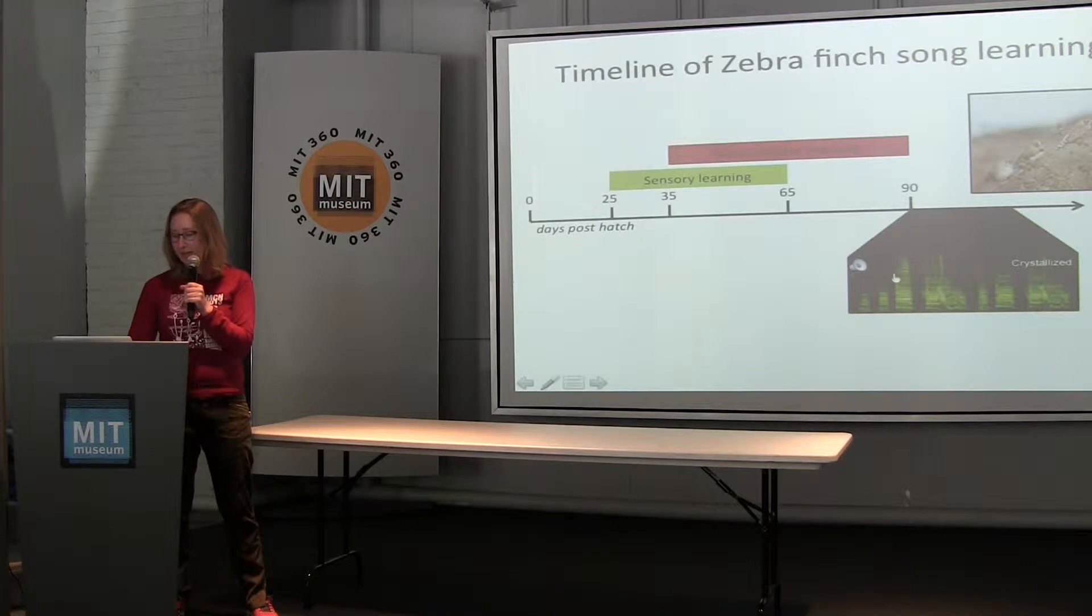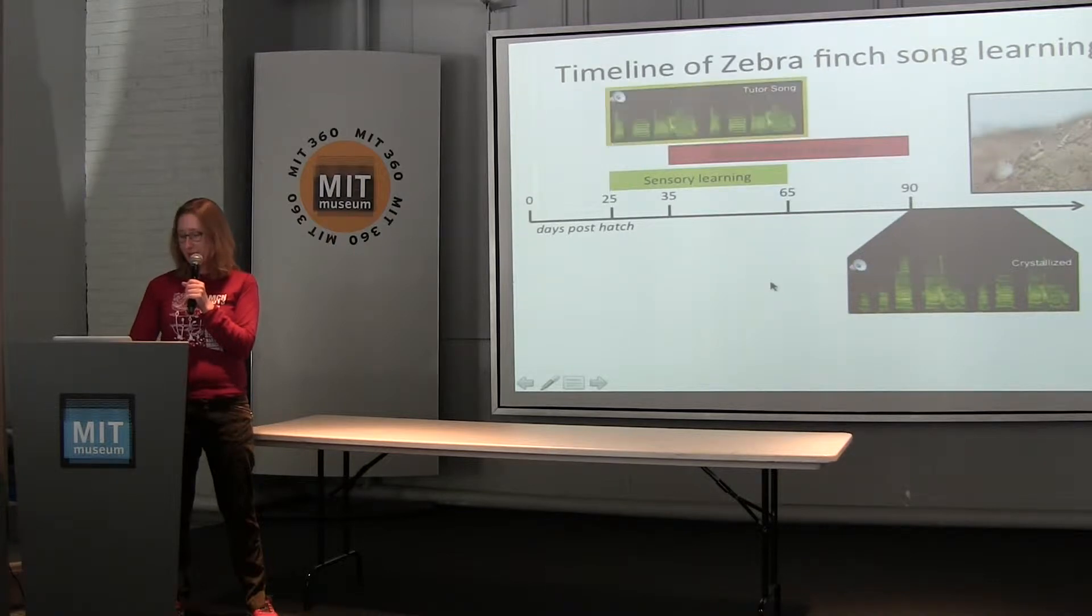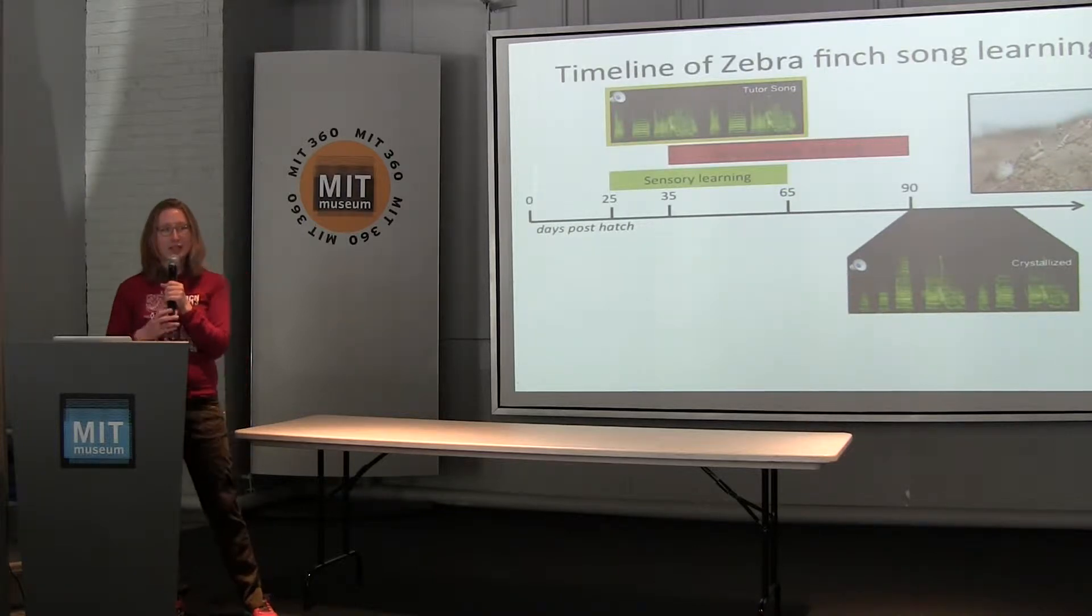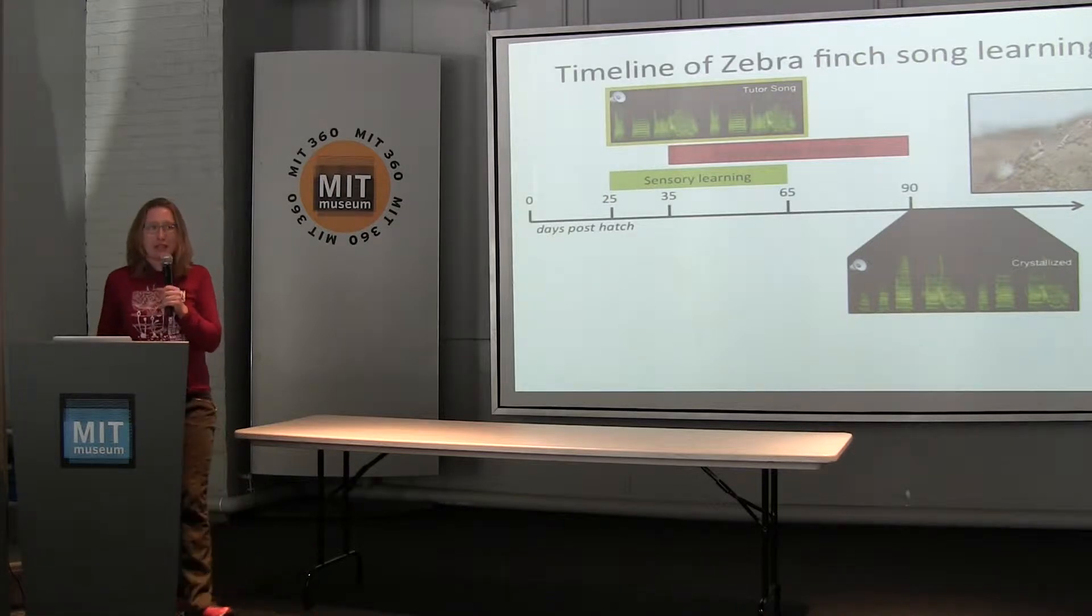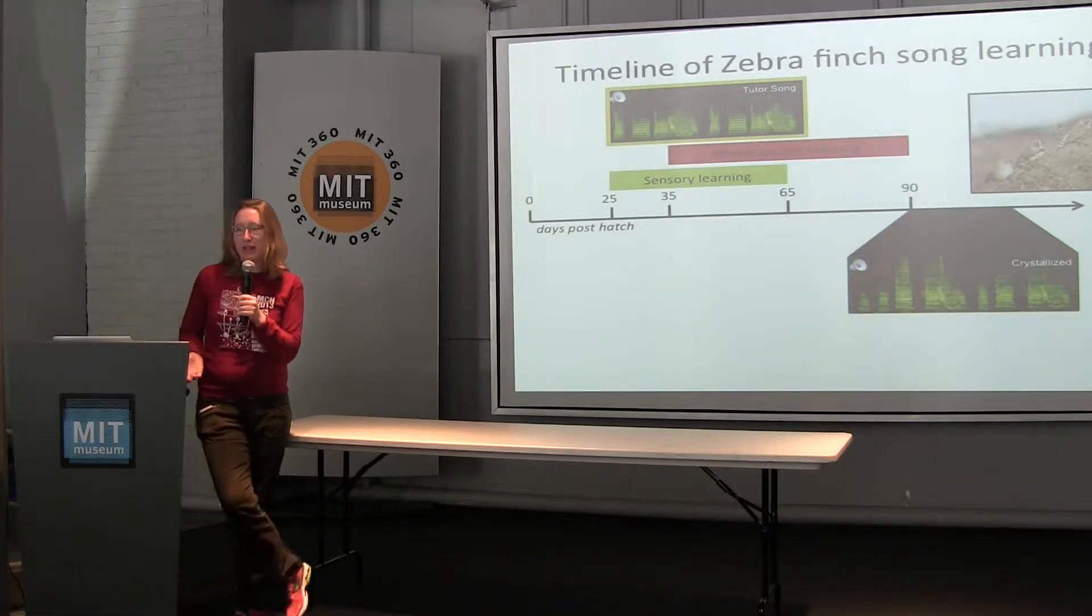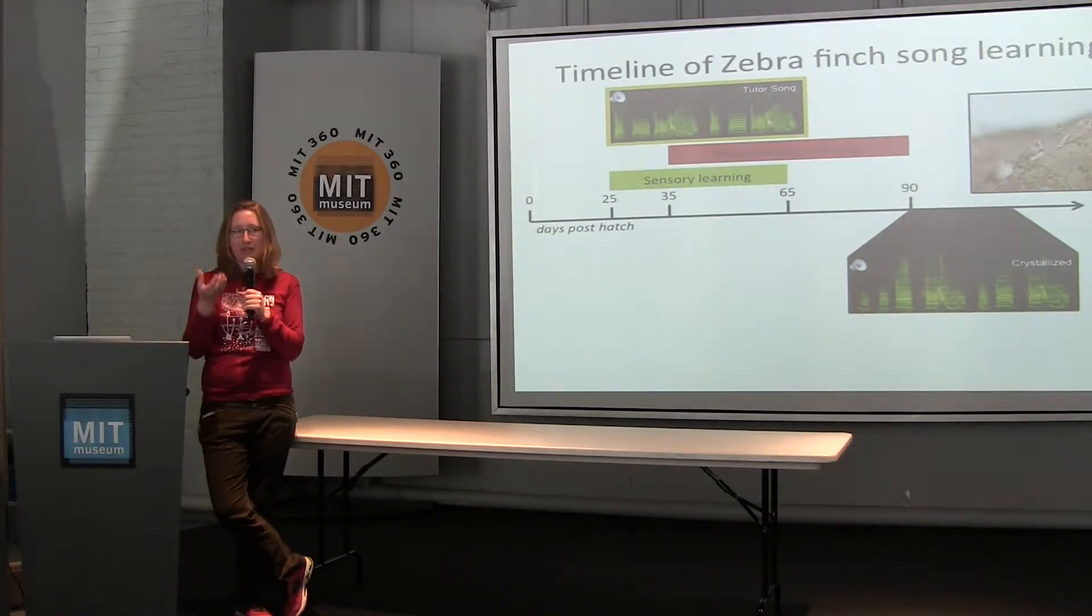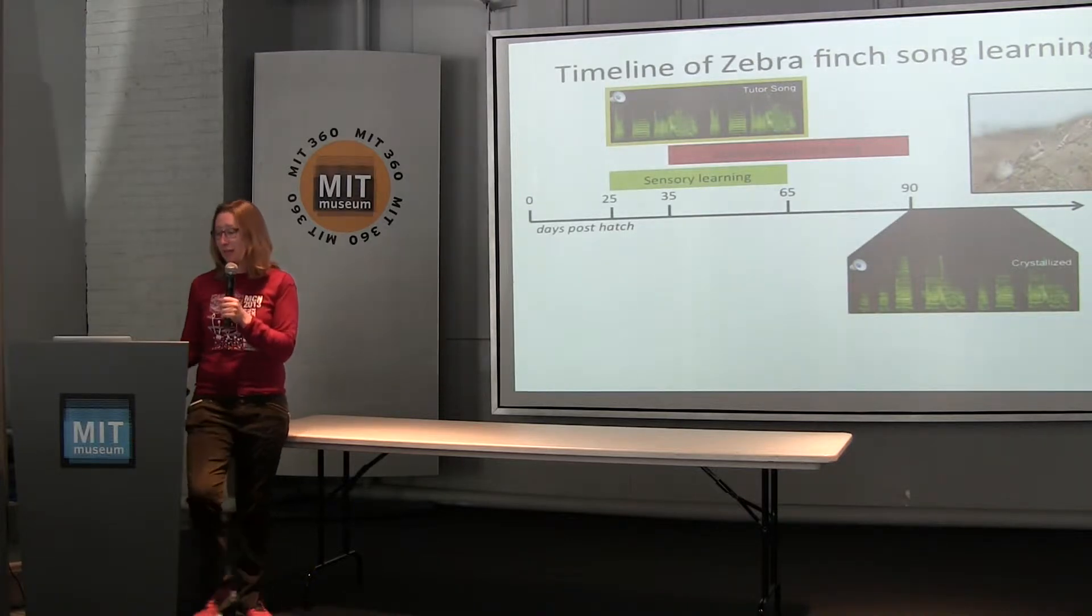And then when he's an adult, this is what his song sounds like. And if you remember, I'm going to play them both one after the other. They sound very similar. So he's done a good job. So what my lab is interested in is how do birds do that? How do they form this precise copy of their father's song? How do they learn?